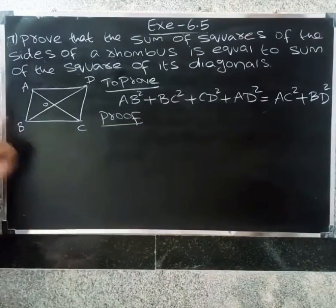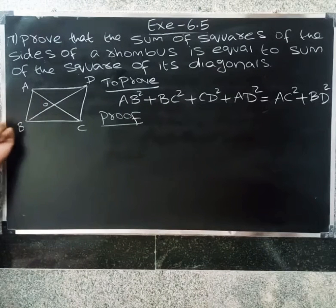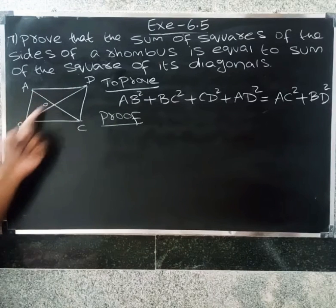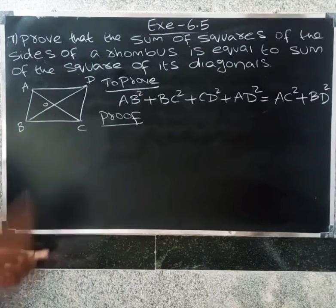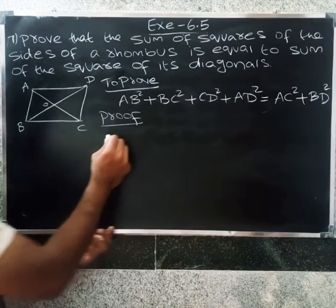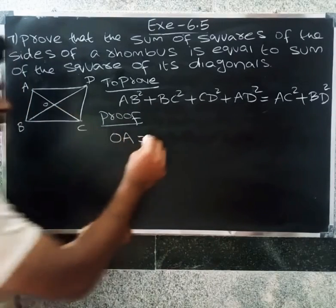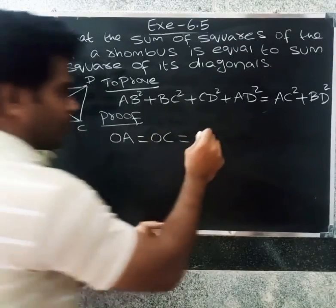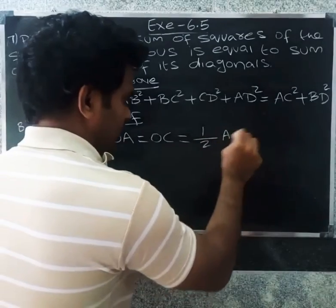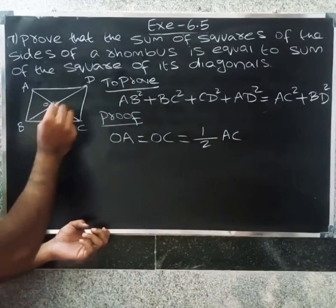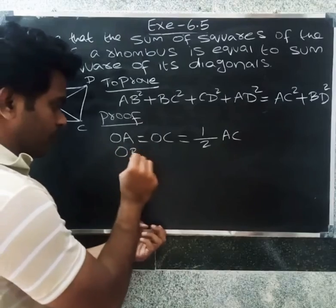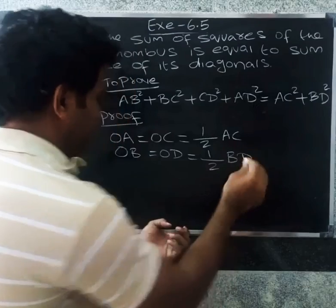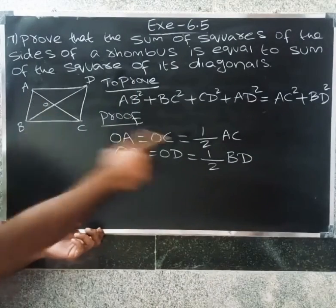ABCD is a rhombus having diagonals AC and BD intersecting each other at point O. Since diagonals of a rhombus bisect each other: OA equals OC equals half AC, and OB equals OD equals half BD.